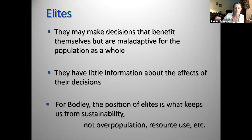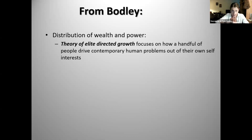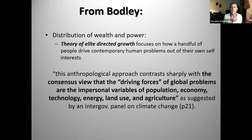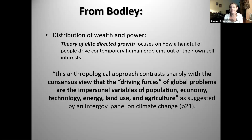His theory of elite-directed growth focuses on how a handful of people drive contemporary human problems out of their own self-interest — so they can own an extra private island in their lifetime. Bodley's approach contrasts sharply with the consensus view that the driving forces of global problems are impersonal variables of population, economy, technology, energy, land use, and agriculture, as suggested by intergovernmental panels on climate change. But agriculture doesn't make policy, population doesn't make policy — decision makers within institutions make policy. Our problems are not natural human problems; they stem from how our societies are organized, largely controlled by this handful of people with all the power.